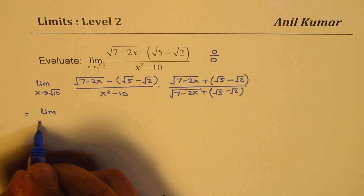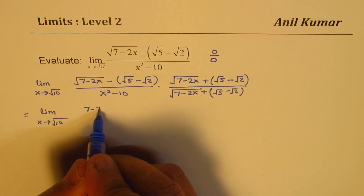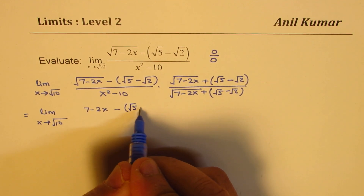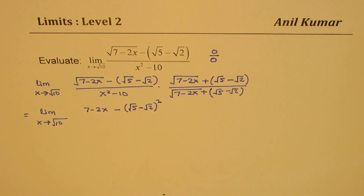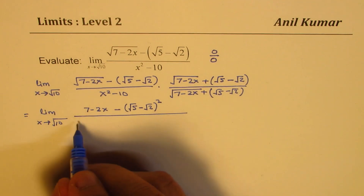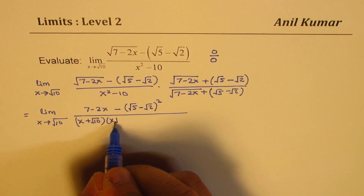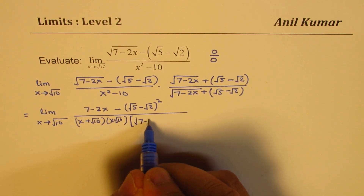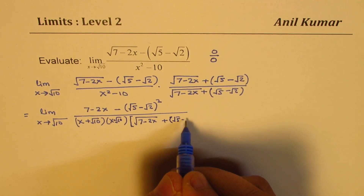Over square root of 7 minus 2x plus square root of 5 minus square root of 2. That will give us the limit as x approaches square root of 10. The square of the numerator will be 7 minus 2x minus the square of square root of 5 minus square root of 2, whole square. The denominator factors as x plus square root of 10 times x minus square root of 10, multiplied by square root of 7 minus 2x plus square root of 5 minus square root of 2.